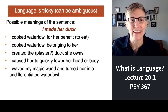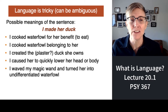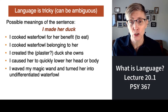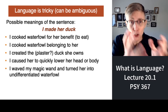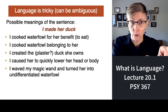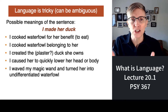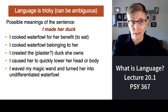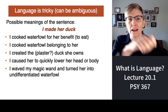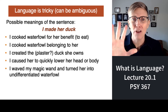Language is tricky — it's really ambiguous. Let's take one sentence: 'I made her duck.' What does that mean? It could mean a lot of different things. It could mean I took a duck, a waterfowl, and I cooked it for her. It could mean I took her duck and cooked it. It could be that I made a wooden carving or plaster sculpture of a duck for her. It could mean I caused her to duck her head. Or it could mean I waved a magic wand and turned her into a duck. That's one sentence with five possible interpretations.